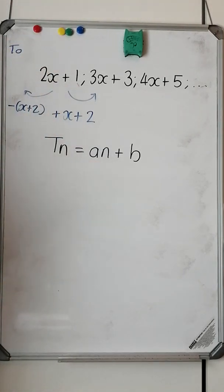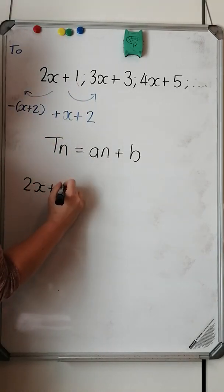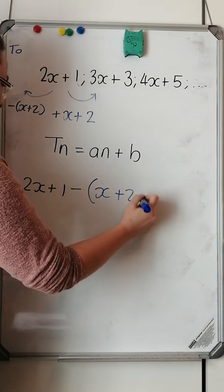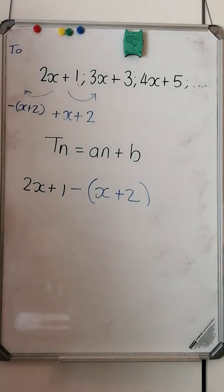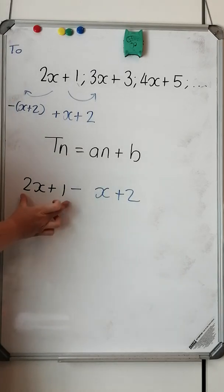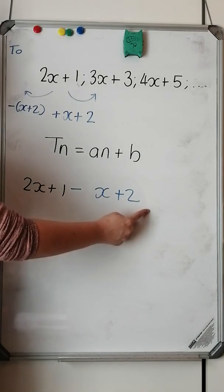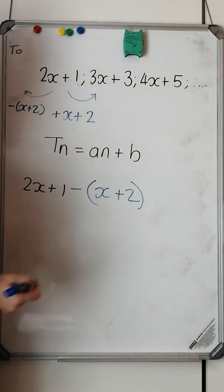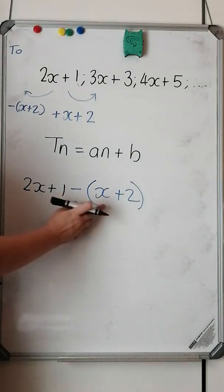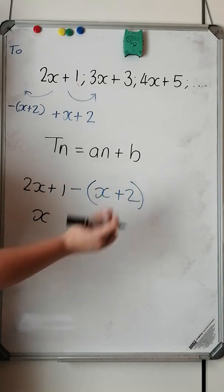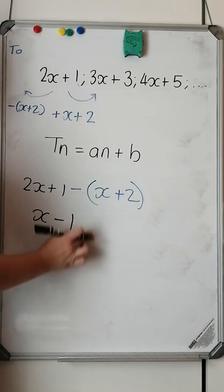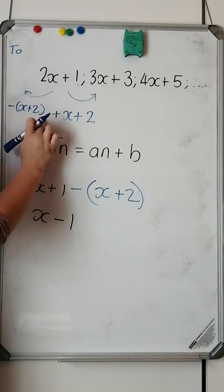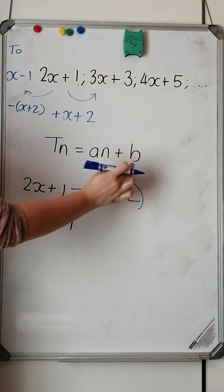I'm going to do the working out here to show you. I take my first term, 2x plus 1, and I need to subtract my constant difference. Note how I put the constant difference in brackets — it needs to go in brackets because without them, I would be saying 2x plus 1 minus x plus 2, which is not what I want. I want to subtract the whole constant difference. Working this out: 2x minus x gives me x, and 1 minus 2 gives me negative 1. So 2x plus 1 minus (x plus 2) leaves me with x minus 1, and that would be my b value.